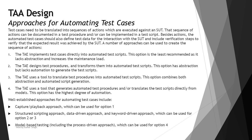A number of approaches can be used to create the sequence of actions. We can write tests directly into automated test scripts, or design test procedures and transform them into automated test scripts. You can use a tool to translate test procedures into automated test scripts. The TAA can also use a tool that generates automated test procedures or translates test scripts directly from models. So there are four different approaches.